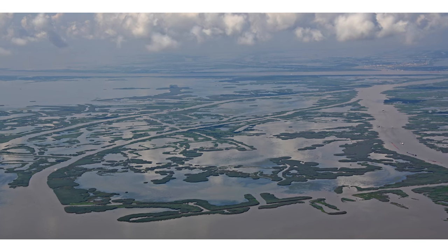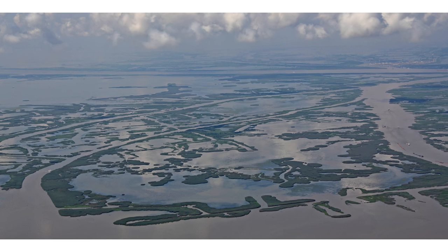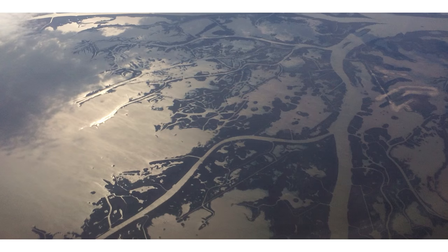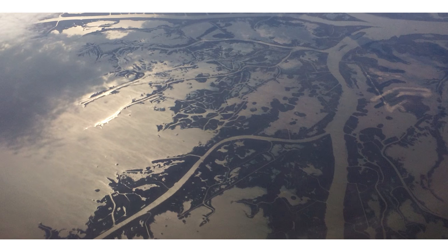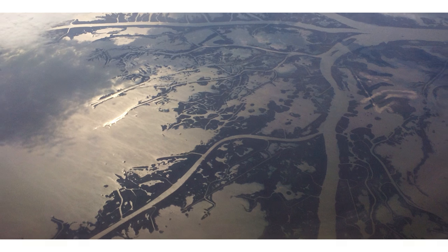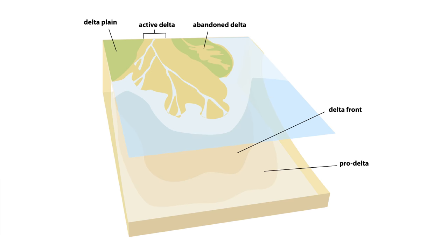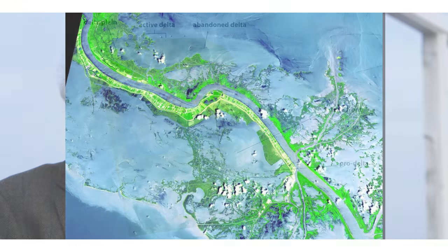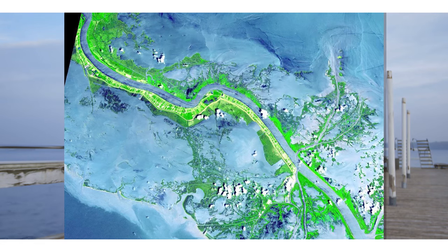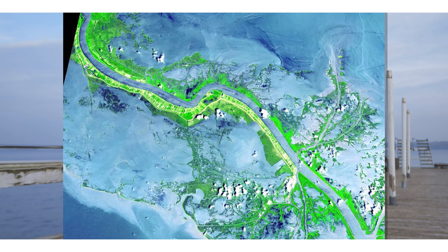Deltas are subaerial and subaqueous accumulations of river-derived sediments. They often form low-lying morphological protrusions of the shore towards the sea and extend offshore for considerable distances underwater, as you can see in the structural sketch or in the extreme morphological protrusion of the Mississippi delta into the Gulf of Mexico.